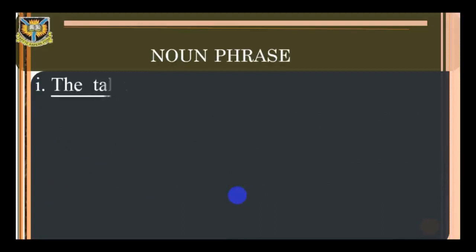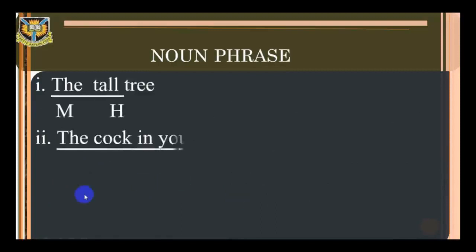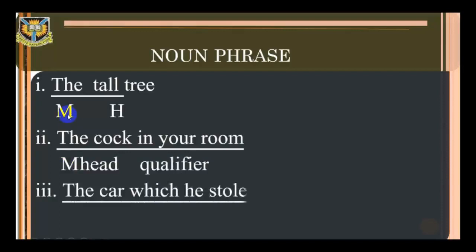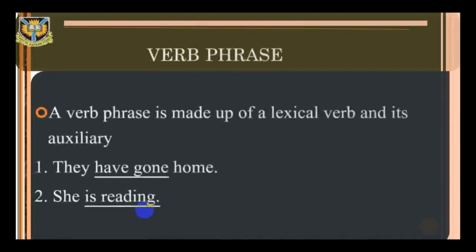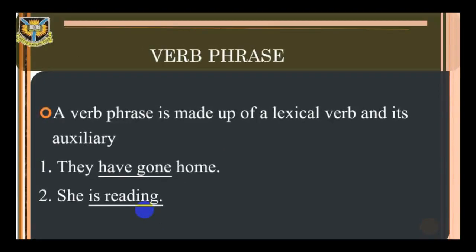For example: 'the tall tree' — 'the tall' is the modifier and 'tree' is the head. 'The coke in your room' — 'the coke' is the modifier and 'in your room' is the qualifier. 'The car which is tall' — 'the' is the modifier, 'car' is the head, and 'which is tall' is the qualifier. Verb phrase: a verb phrase is made up of a lexical verb and its auxiliary. For example, 'they have gone home,' 'she is reading.'